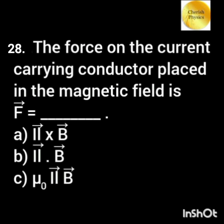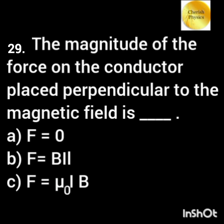The force on a current-carrying conductor placed in a magnetic field is dash. The magnitude of force on the conductor placed perpendicular to the magnetic field is dash.